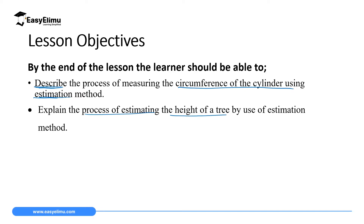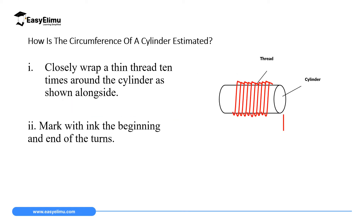The first estimation we are going to carry out is how to estimate the circumference of a cylinder. You take a thread — say a red thread — and you have a cylinder. The first step: you closely wrap a thin thread around the cylinder 10 times. You start from one end and wrap it 10 times around.